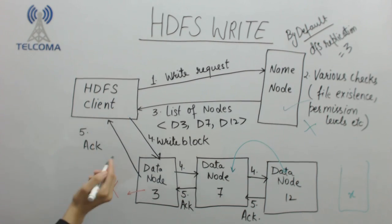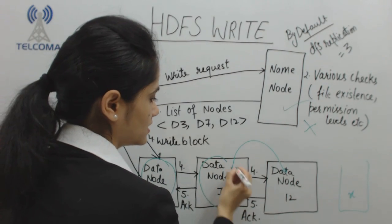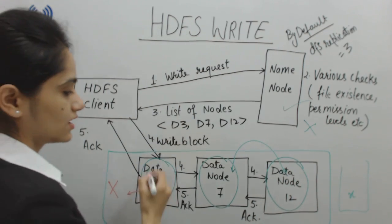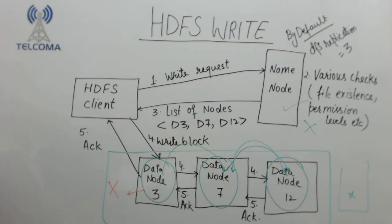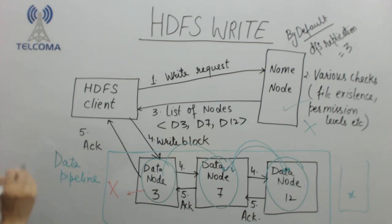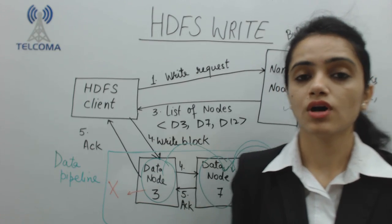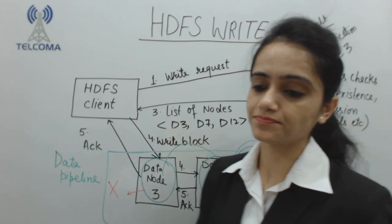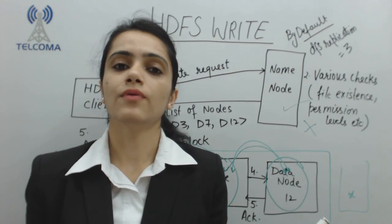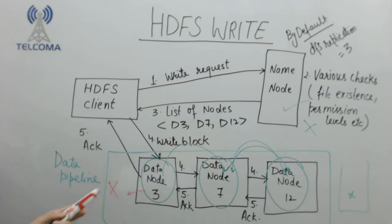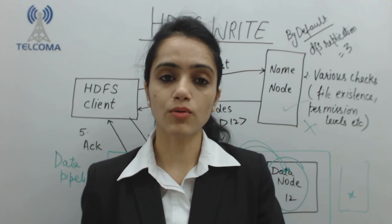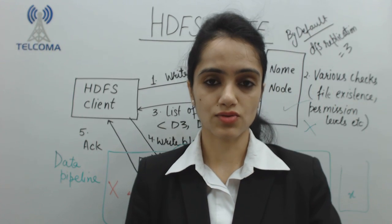The client contacts data node 3, then data node 7, and then another data node, forming a pipeline. This is called a data pipeline — data is present across all these nodes in a pipeline fashion. The procedure is called data pipelining, meaning connecting multiple data nodes. In the HDFS write operation, the client contacts the name node, receives a list of nodes, and writes data to multiple nodes. We will discuss the next part in our next class.